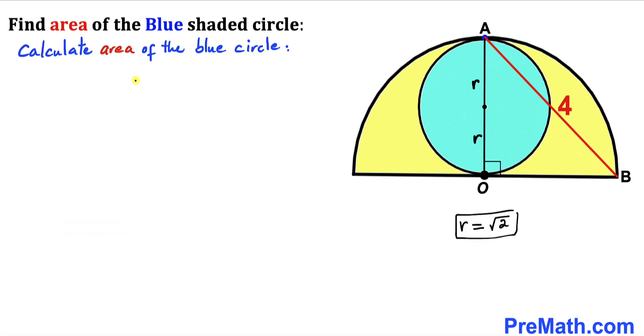And here's our final step. Let's go ahead and calculate the area of this blue shaded circle. And now let's recall the area of a circle formula: Area = πr². In our case, r radius turns out to be √2.